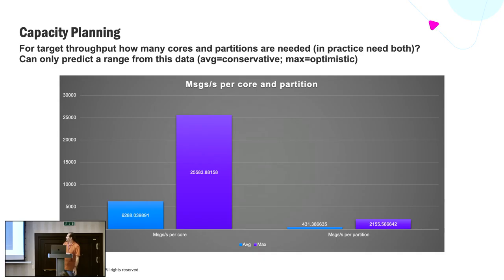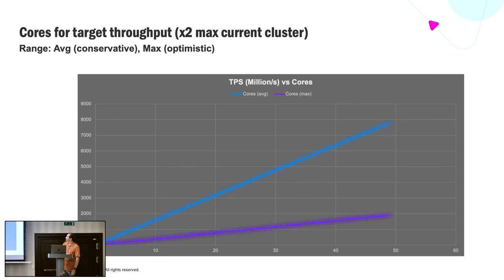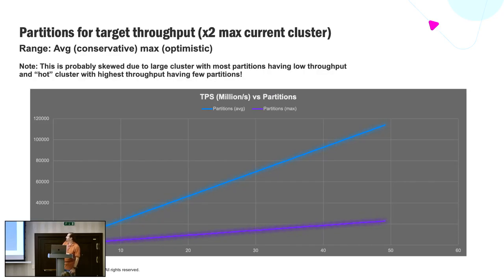Can you use any of this data for capacity planning? I wouldn't recommend it, but it does give a very broad range of things you can aim for. For a particular target throughput, you can try to work out how many cores and partitions are needed — in practice you need both. Assuming double the size of the current maximum cluster, this gives a range of TPS in millions of transactions per second per core, from an optimistic to a more pessimistic range, and the same for partitions. I wouldn't trust those results in practice, but it gives a feel for the potential range.